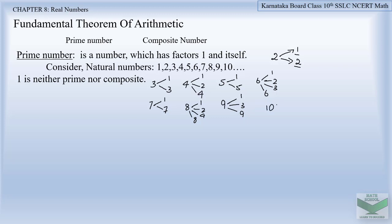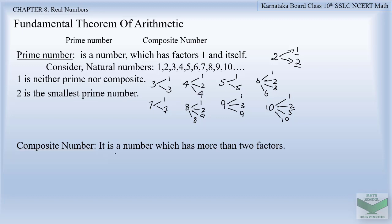Number 10 is divisible by 1, 2, 5, and itself, so it is again a non-prime number. Any number which is not prime, or which has more than two factors, is termed as a composite number — a number which has more than two factors other than 1 and itself. So 4, 6, 8, 9, and 10 are composite numbers. The prime numbers we saw are 2, 3, 5, and 7, and among all prime numbers, 2 is the smallest prime number.